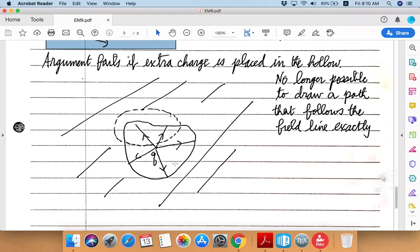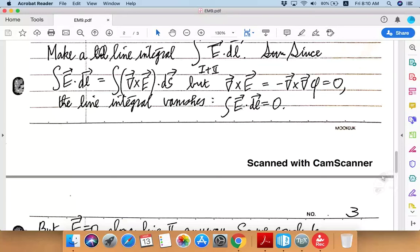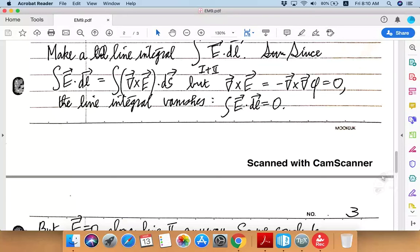And therefore the line integral does not have to vanish anymore. Well anyway, I mean this whole setup of the proof basically breaks down once you have extra charge placed inside like this. Okay, so that's it for today. Thank you.